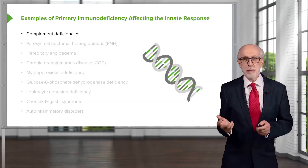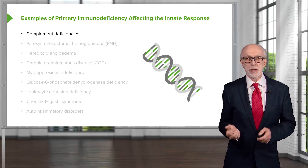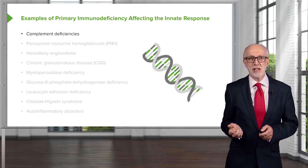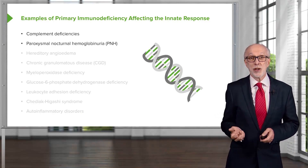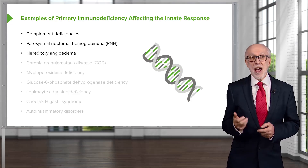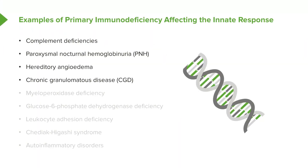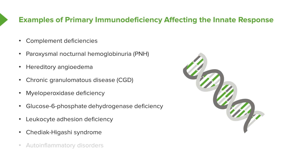Examples of primary immunodeficiencies that affect the innate response include complement deficiencies, paroxysmal nocturnal hemoglobinuria, hereditary angioedema, chronic granulomatous disease, myeloperoxidase deficiency, glucose-6-phosphate dehydrogenase deficiency, leukocyte adhesion deficiency, Chediak-Higashi syndrome, and a number of auto-inflammatory disorders.